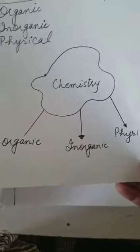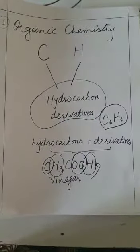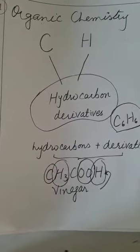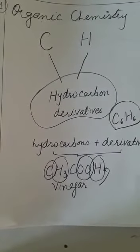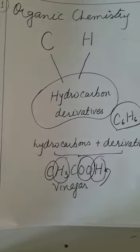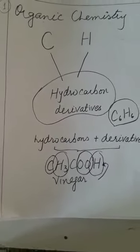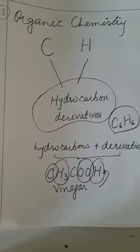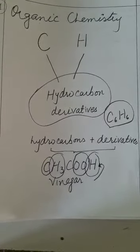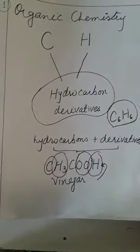The main branches of chemistry are three: organic, inorganic, and physical chemistry. Organic chemistry is actually the study of hydrocarbons. Hydrocarbons are those compounds which contain carbon and hydrogen. There are some other compounds which are derived from the hydrocarbons, and these compounds are known as derivatives. So organic chemistry is defined as the chemistry concerned with the study of hydrocarbons and their derivatives.